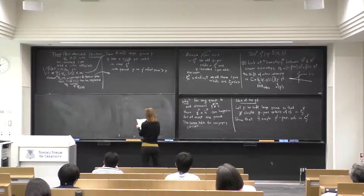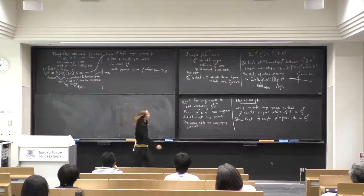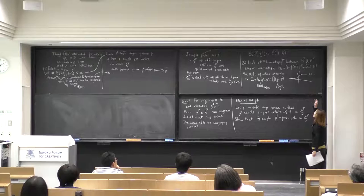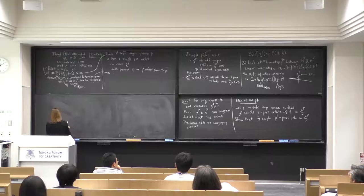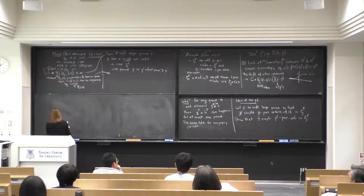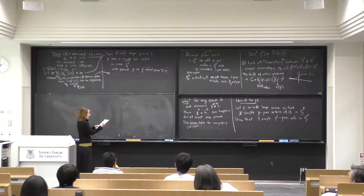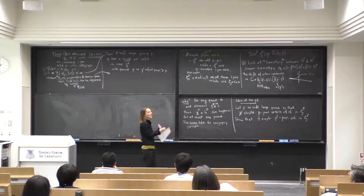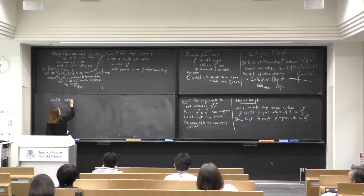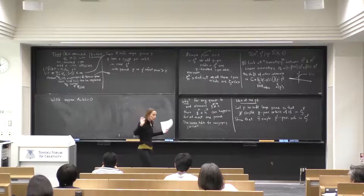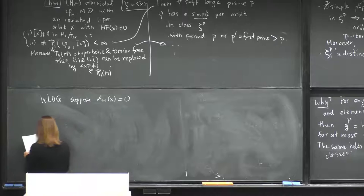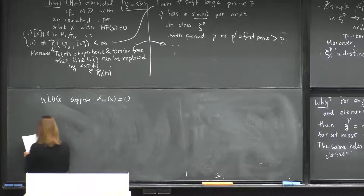One more thing worth noting: when doing this continuation, we are doing a homotopy between orbits in the same homotopy class, and these maps preserve the homotopy class — these are cylinders between orbits in the same class. As a notational simplification, assume without loss of generality that the action of orbit x is equal to zero. You can always add a constant to your Hamiltonian, which does not affect dynamics.